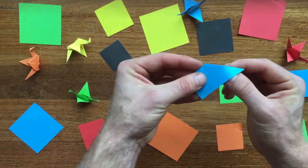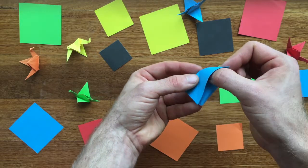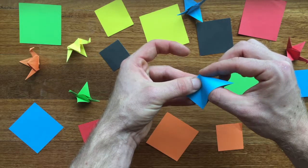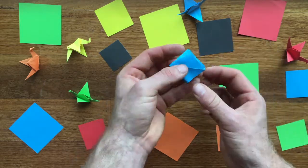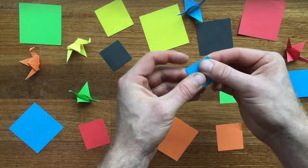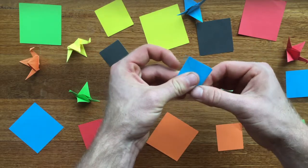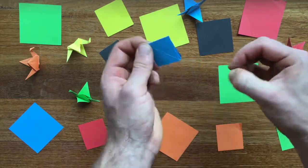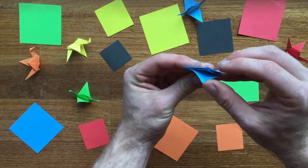We're then going to pop a thumb into here, that little pocket there, and then just press gently on the tip there. You'll then find that you can flatten into another square. So that'll give you then a little opening through here.